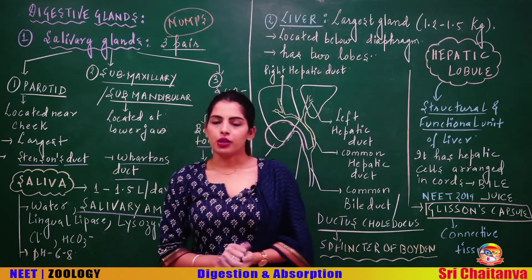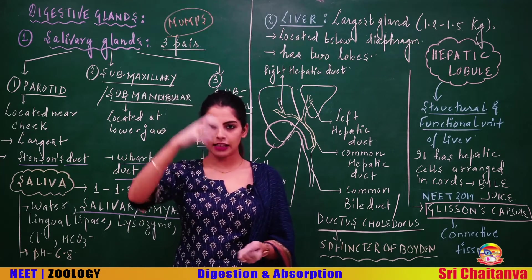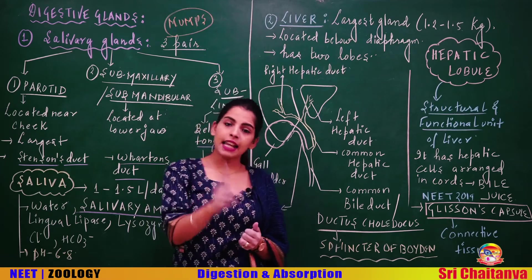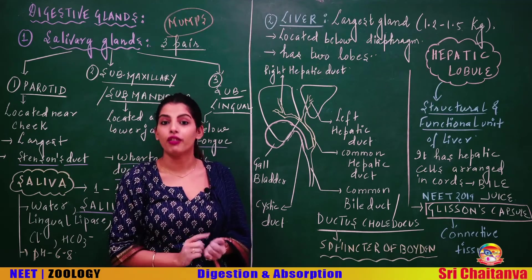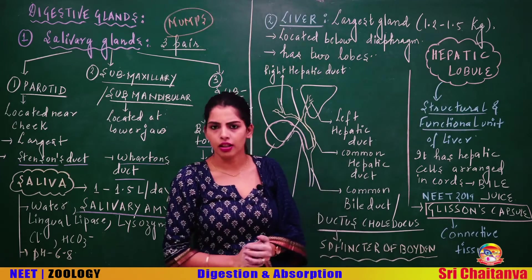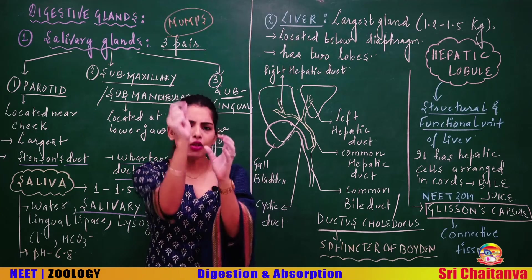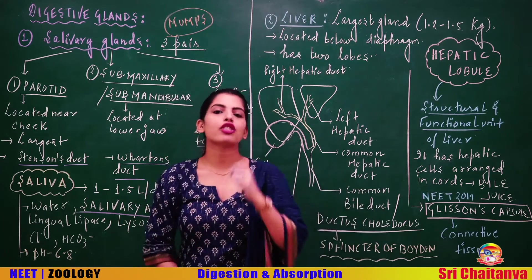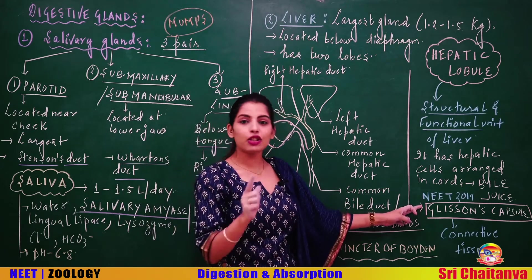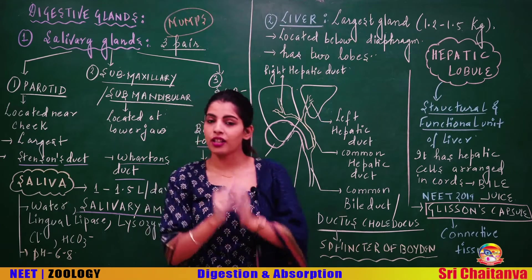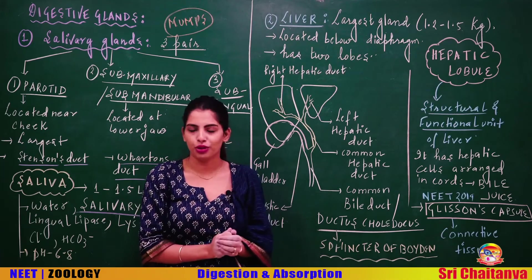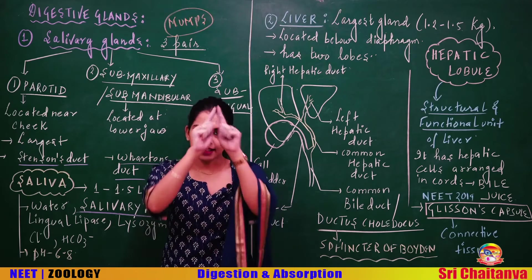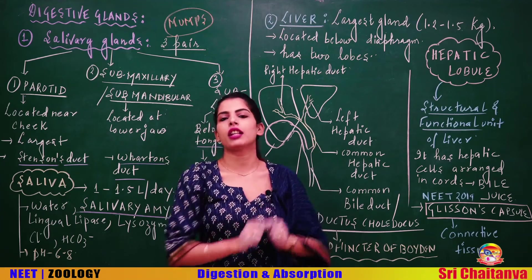The structural and functional unit of the liver is the hepatic lobule — a hexagonal structure. Each hepatic lobule has cords of hepatic cells that produce bile juice. In NEET 2019 there was a match-the-following question about Glisson's capsule — it is the characteristic feature of the mammalian liver, a connective tissue that covers the hepatic lobule.